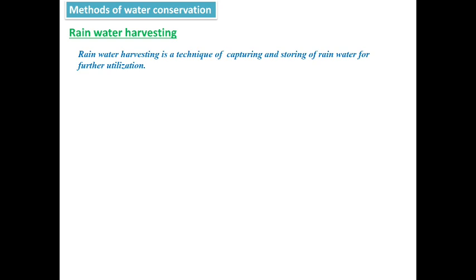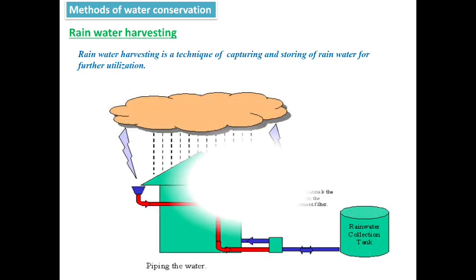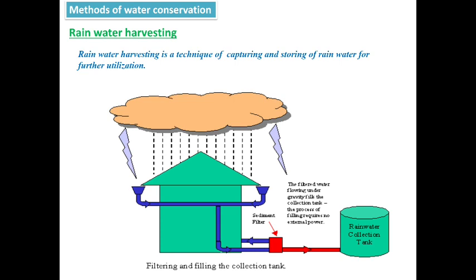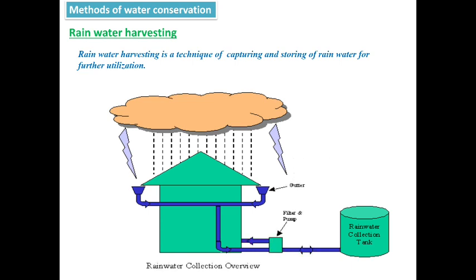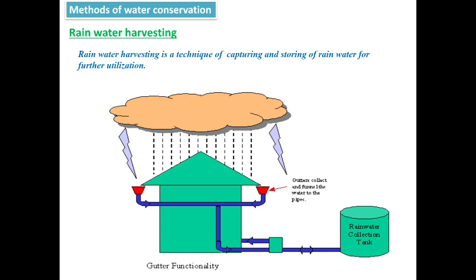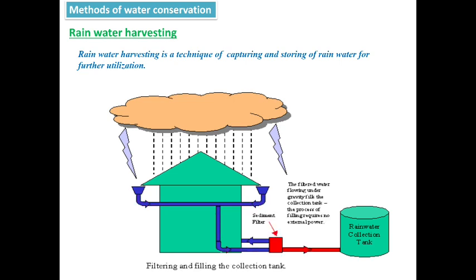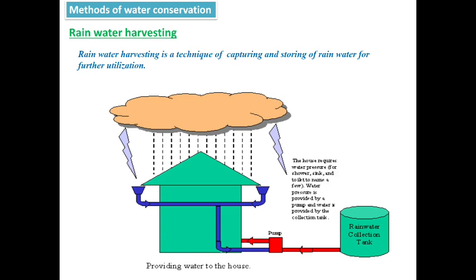Next we are going to discuss two methods of water conservation: rainwater harvesting and watershed management. First, we will see about rainwater harvesting. This method is used in our day-to-day life — warehouses, colleges, government offices, and industries all use rainwater harvesting. Rainwater harvesting is a technique of capturing and storing rainwater for future utilization. The picture explains how rainwater is collected through pipelines and stored in a collection tank.